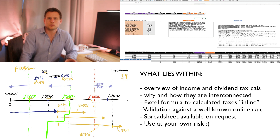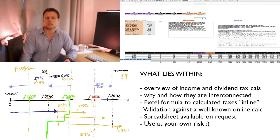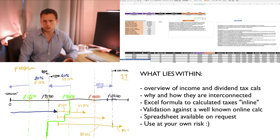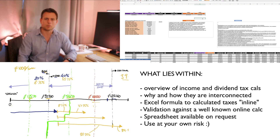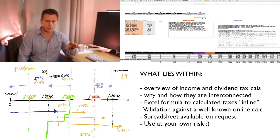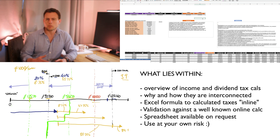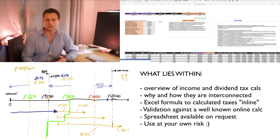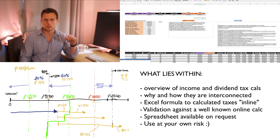In this video I want to talk about the income tax and dividend tax calculations for the UK, specifically for the tax year 2023-24. The concepts all apply to previous tax years but with different thresholds and input parameters. The real purpose of the video is to demonstrate how you can do the calculation in Excel with no macros, using simple input parameters that you can build into your own models.